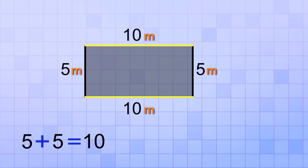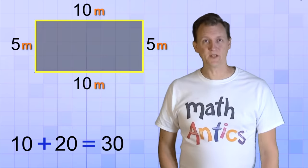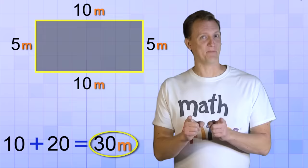Next, I'll add up the two longer sides. 10 plus 10 equals 20. And now, if I add up those two answers, I'll get the total for all four sides. 10 plus 20 equals 30. So, the perimeter of this rectangle is 30.